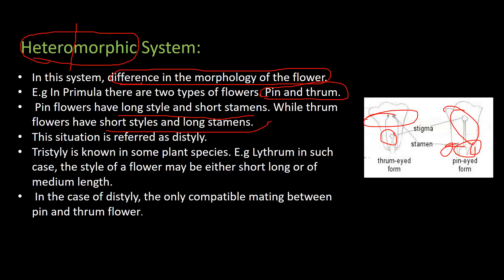There is also tri-stylee in species like Lythrum, where the style may be short, long, or medium — three kinds. In the case of di-stylee, the only compatible mating is between pin and thrum flowers; mating between two pin flowers or two thrum flowers cannot occur.